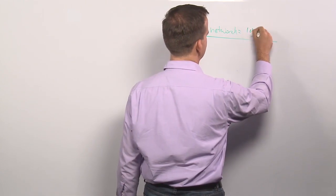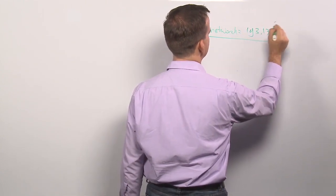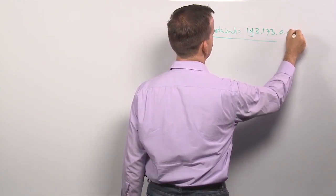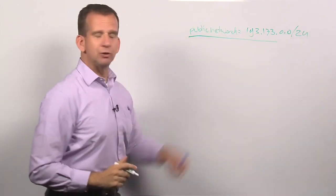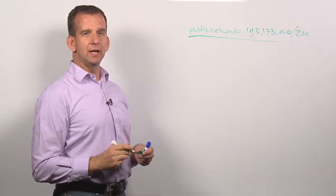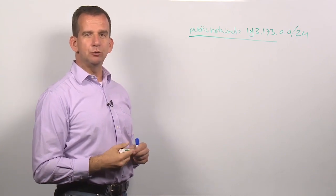Let's say 192.173.0.0/24, or a registered internet IP address, is the IP address that is being used on the public network.